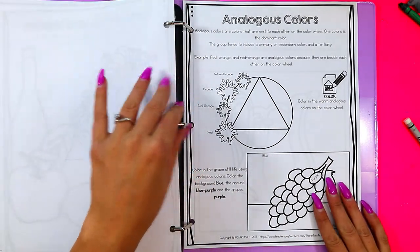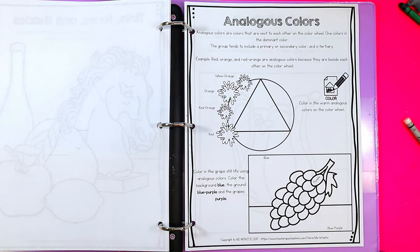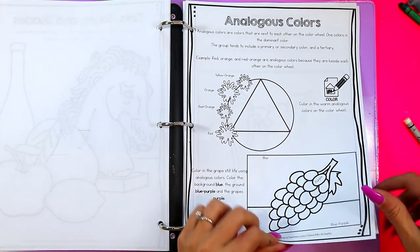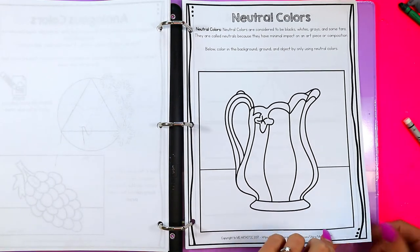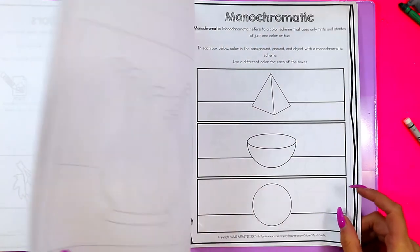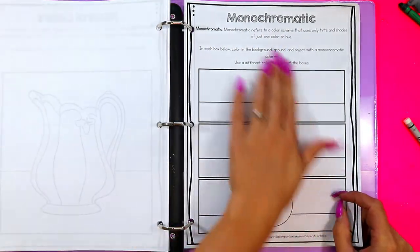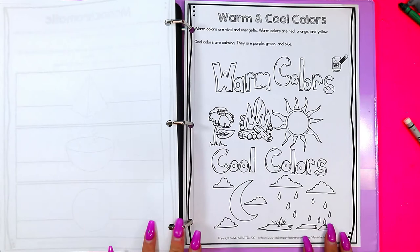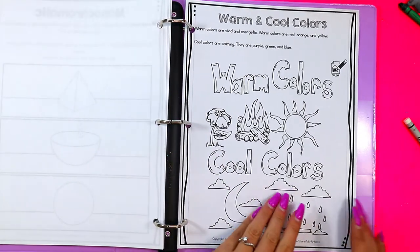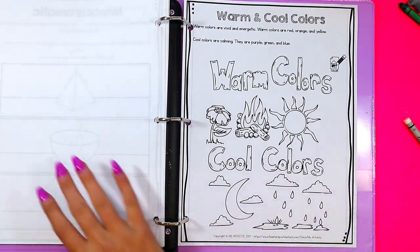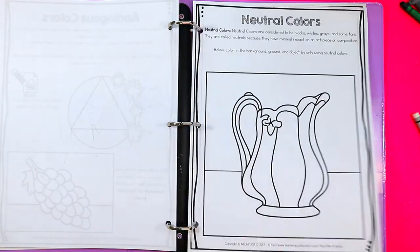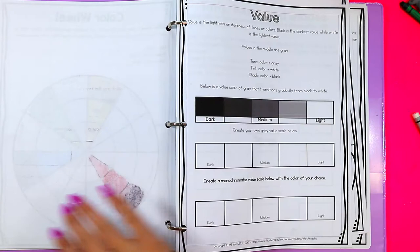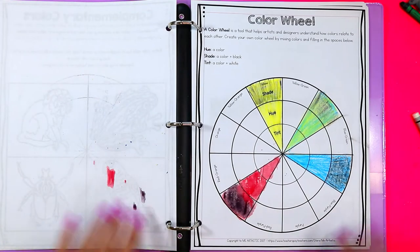And then they'll be using their tint, tones, and shades on a still life to create something. And then we'll talk about analogous colors, neutral colors, monochromatic color schemes, coloring with the warm and cool colors, and so many more. So this is a fabulous art resource. There are so many more pages in here. So let's take a look at the full resource and go through it as a screenshot preview thing. I'm going to show you every single page that you're going to get.